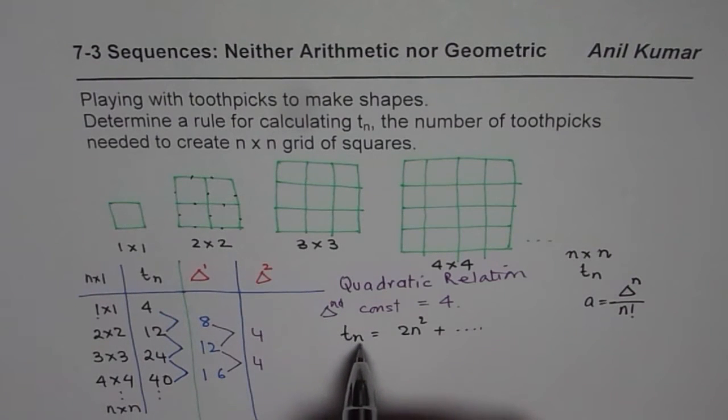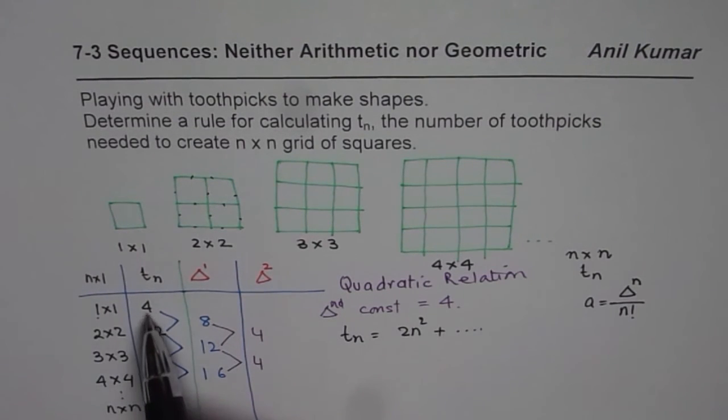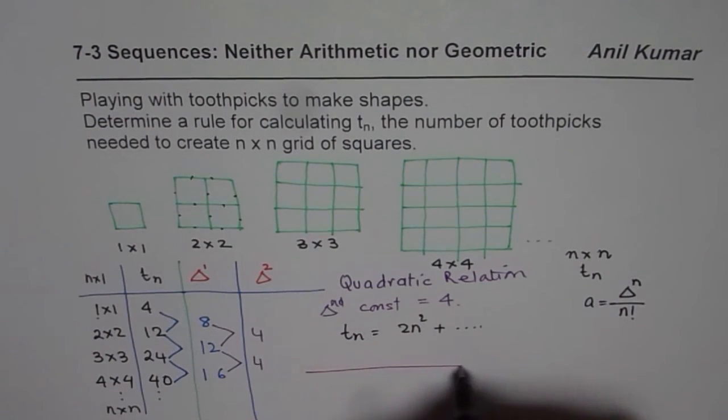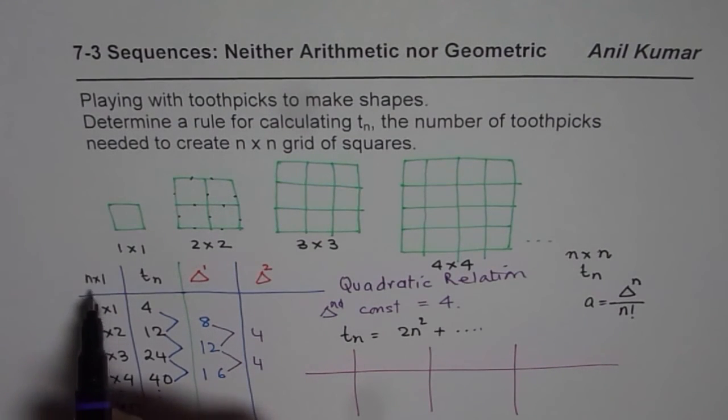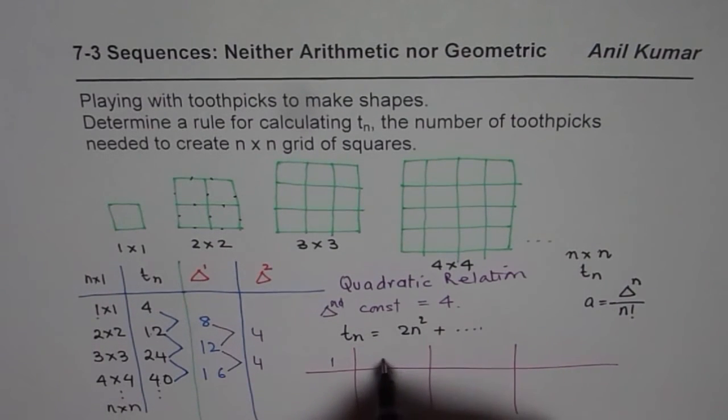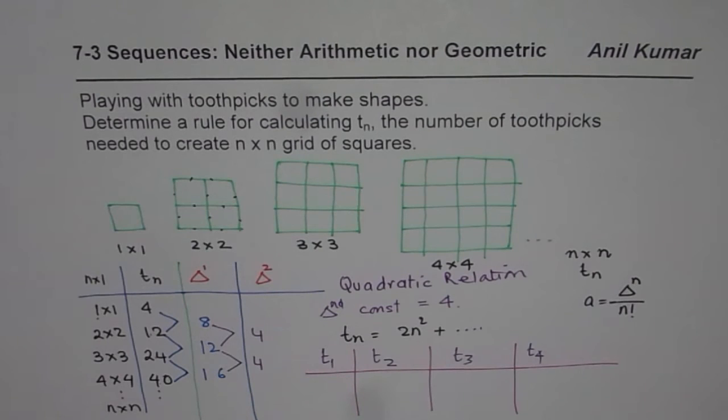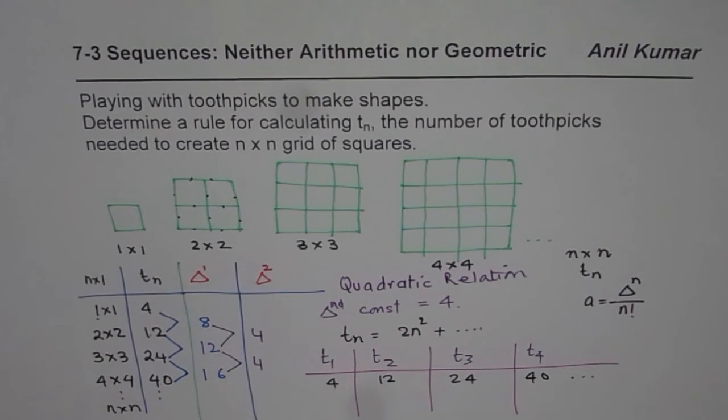We kind of know that now tn, its term, could be related with two n square plus something. Plus what? This is what we will figure out. Let us write down these numbers again and then relate them with what we have learned. I will write again a table. What we are trying to do now is writing n numbers which is 1, 2, 3, 4. This is my t1, t2, t3, t4, and the values are 4, 12, 24, 40. We know 2n square is part of our equation. What is the other part?